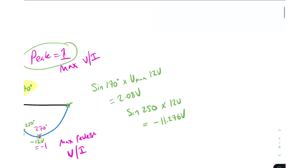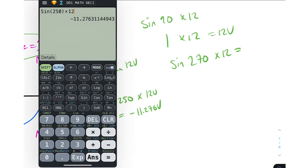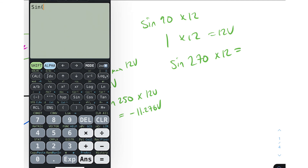Think about it like this: if you did the same thing for 90 degrees — sine 90 times 12 — well, the sine of 90 from the unit circle is one, so one times 12 equals 12. The peak voltage is 12 volts. And we could do the same for sine of 270 times 12: we know already that sine of 270 is minus one, and the calculator confirms it. Minus one times 12 gives you minus 12 volts. Amazing.